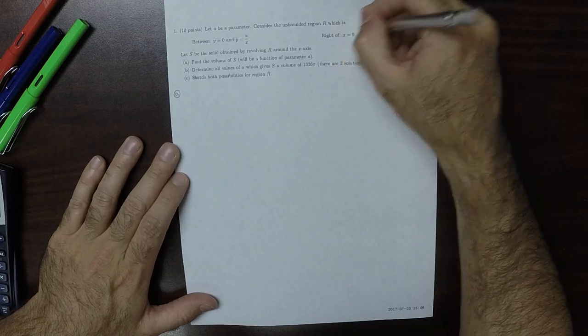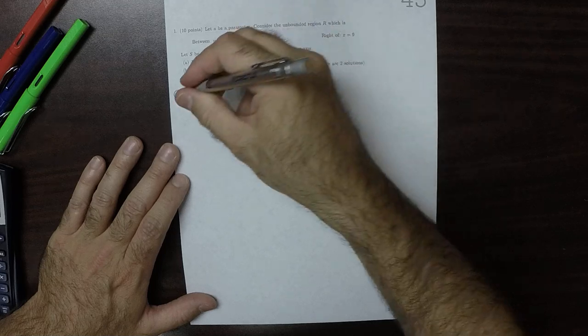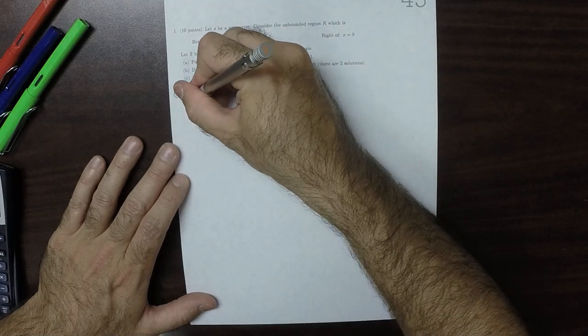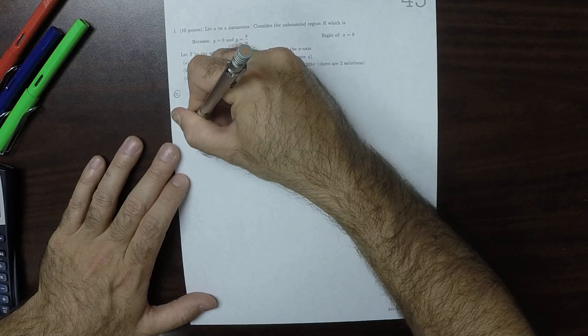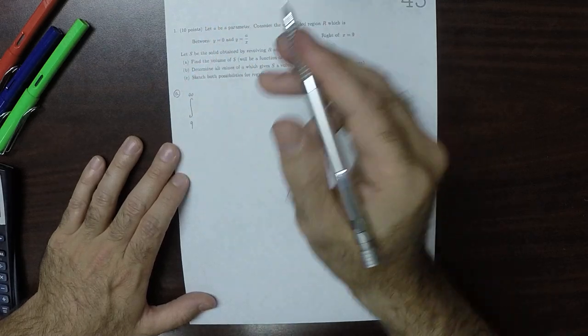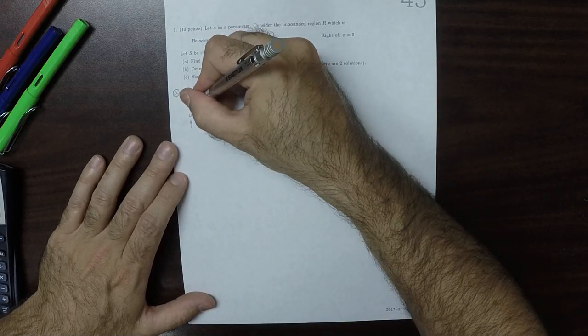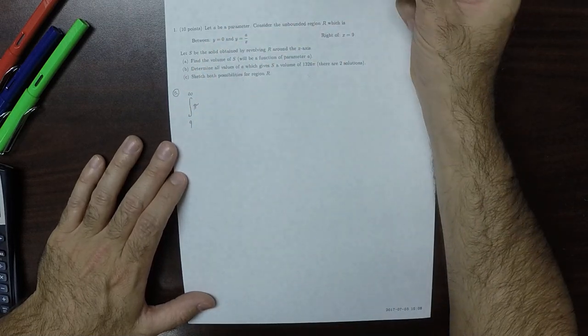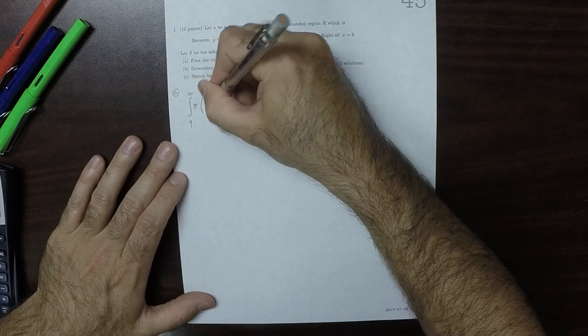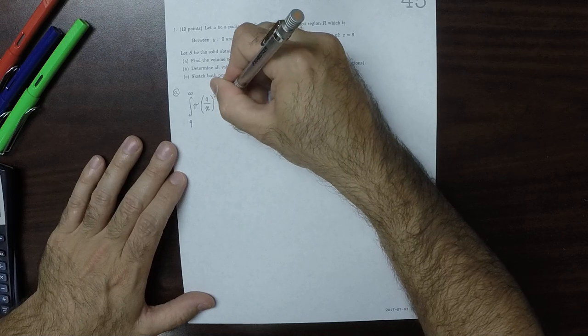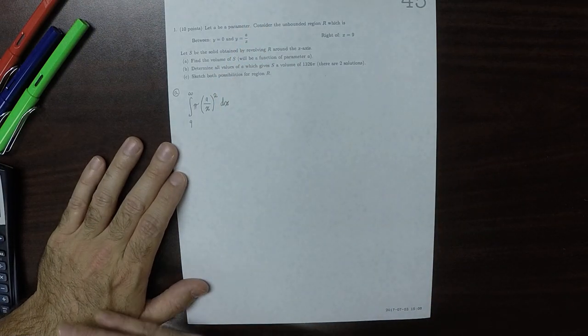So since it just says to the right of x is 9, that means that the answer is the integral from 9 to infinity. You have to go all the way to infinity because that's everything to the right of 9. And then pi, A over x squared. So pi r squared h.